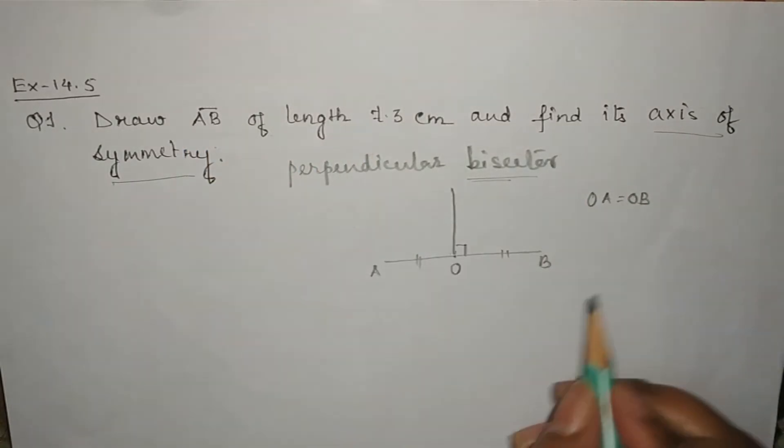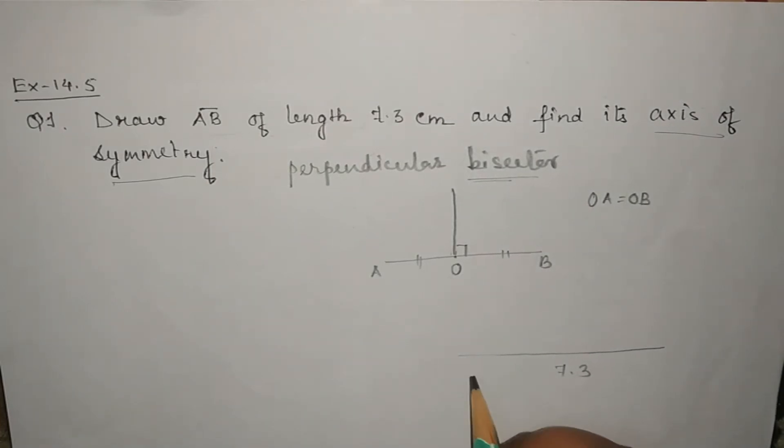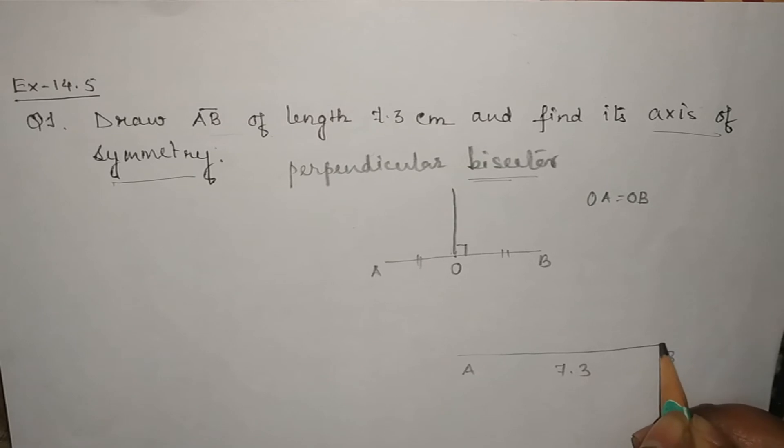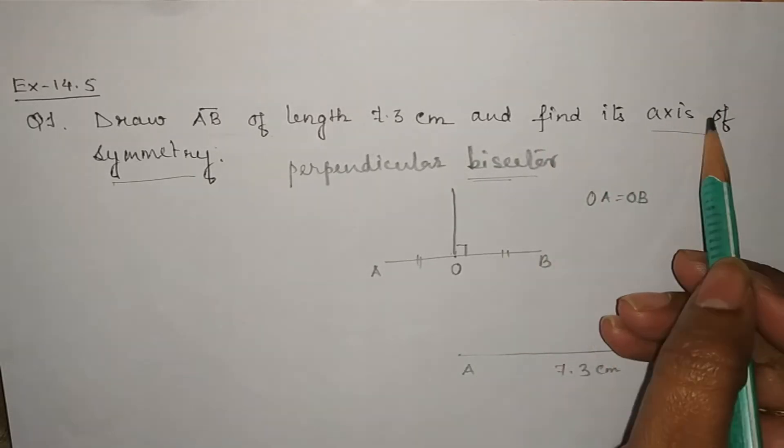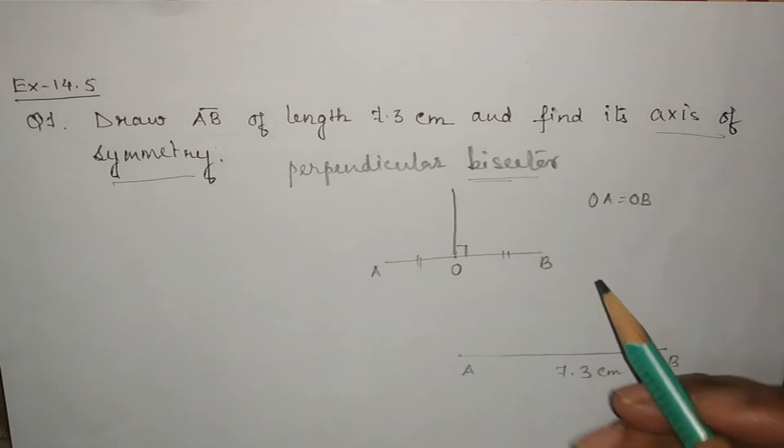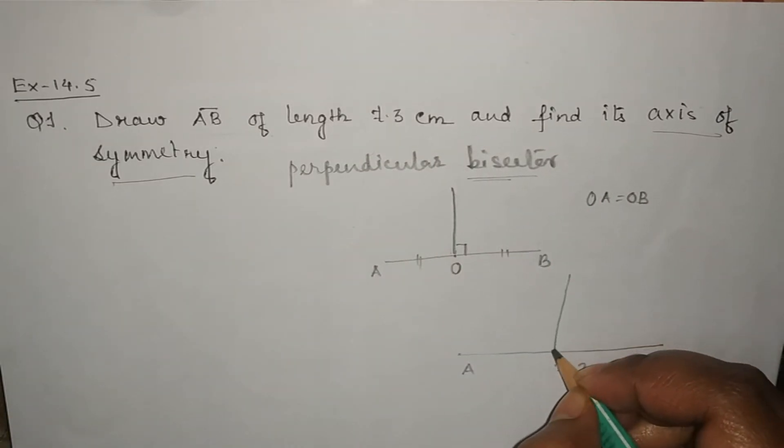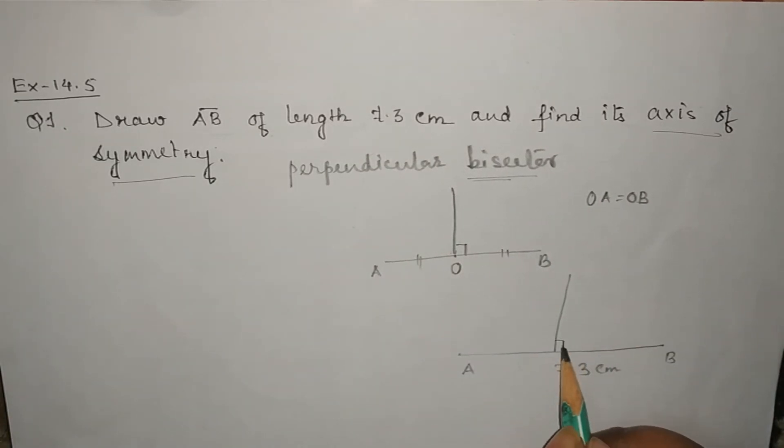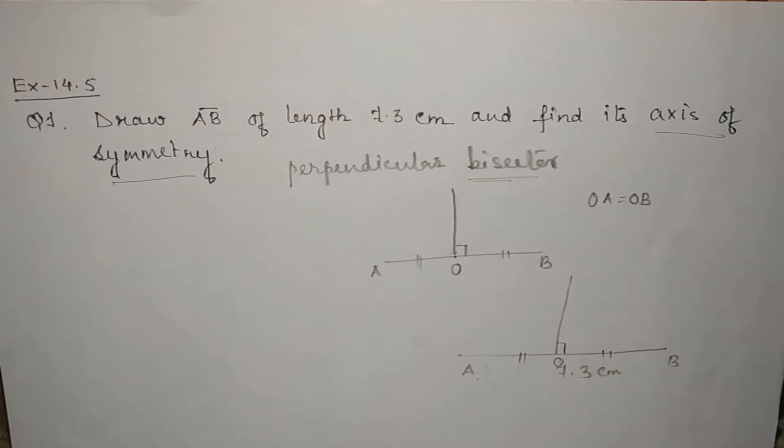Now here it is said that a line segment AB of length 7.3 cm. Suppose this is a line segment AB of 7.3 cm. Now find its axis of symmetry means we will have to draw the perpendicular bisector which will divide AB into equal halves. That means OA will be equal to OB. So let us draw a line segment AB.